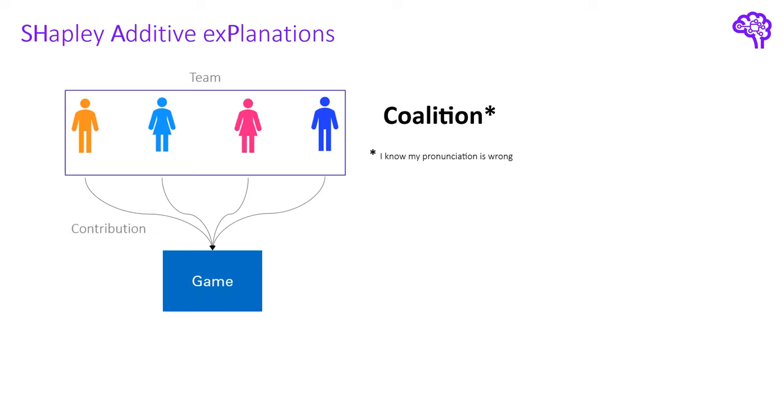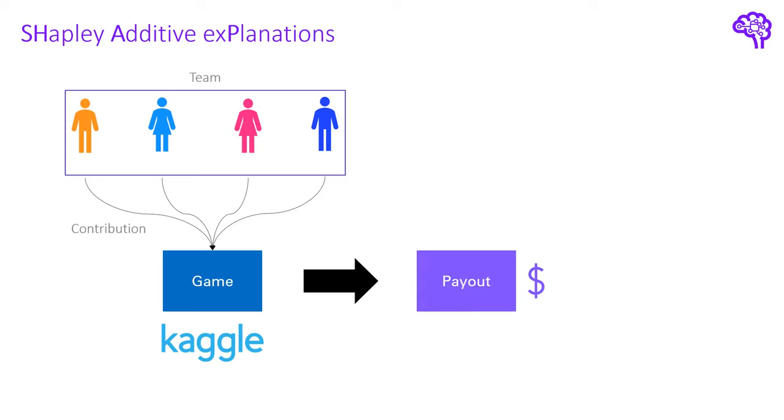Imagine we have a group of different people that together cooperate in a game. This group is also called a coalition and the cooperative game could be for instance a Kaggle competition. After the game is over they get a certain payout for their achieved result. For instance they get $10,000 for scoring first place. Now the central question here is how is that money distributed among the people so that the distribution is fair. Each member of the coalition contributed differently and therefore splitting it in equal parts might be unfair for some.